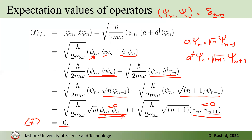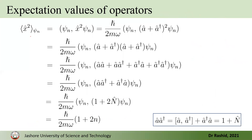Now let's calculate the expectation value of x-squared. We write x-squared using the same expression we had for x, just squared. This means we multiply (a + a†) by (a + a†), giving four terms: a·a, a·a†, a†·a, and a†·a†.